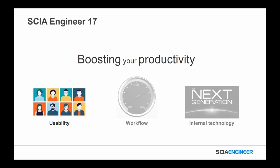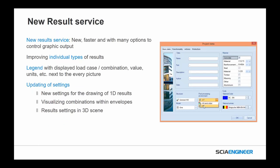The final part of our motivation — boosting productivity — was usability. We did a lot of work on usability based on user feedback and internal development learning. The first is a new, more efficient results service with many more options for controlling graphical output. It's enabled through the project data. We've improved individual types of results — more robust results for supports, reactions, and 1D members — with the legend displaying load cases and combinations, values and units next to every picture, and better update of settings. This will continue to be developed going forward.